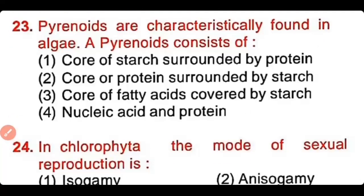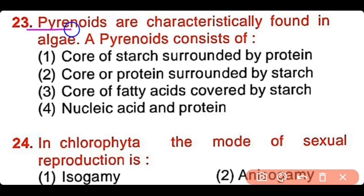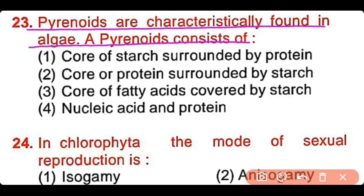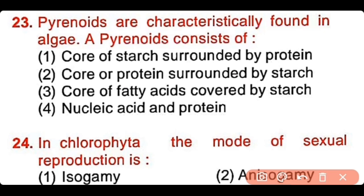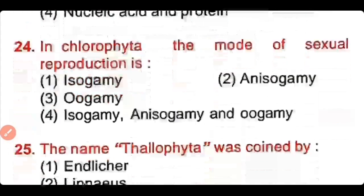Question number 23: Pyrenoids are characteristically found in algae. A pyrenoid consists of a core of starch surrounded by protein, a core of protein surrounded by starch, a core of fatty acids covered by starch, or nucleic acid and protein? The correct answer is option 2. Pyrenoids consist of a core of protein surrounded by starch, and they help in photosynthetic carbon dioxide fixation.